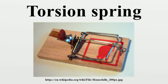The torsion pendulum used in torsion pendulum clocks is a wheel-shaped weight suspended from its center by a wire torsion spring. The weight rotates about the axis of the spring, twisting it, instead of swinging like an ordinary pendulum. The force of the spring reverses the direction of rotation, so the wheel oscillates back and forth, driven at the top by the clock's gears.